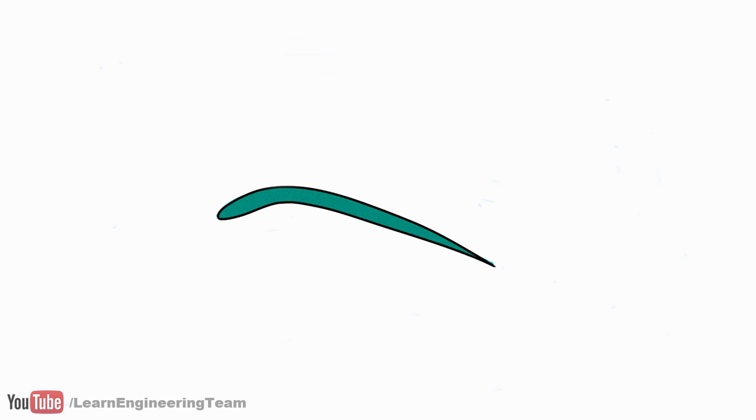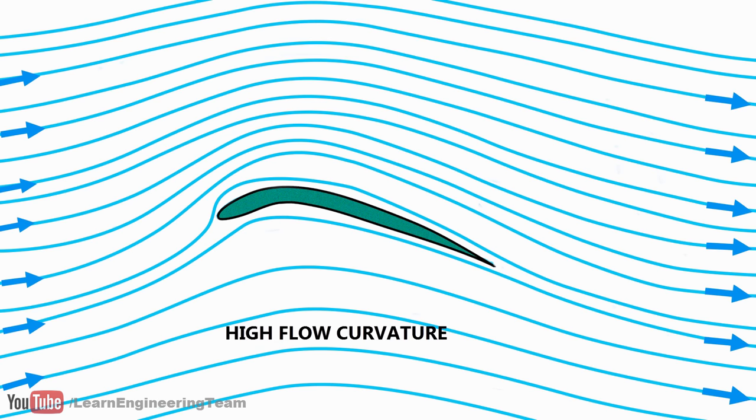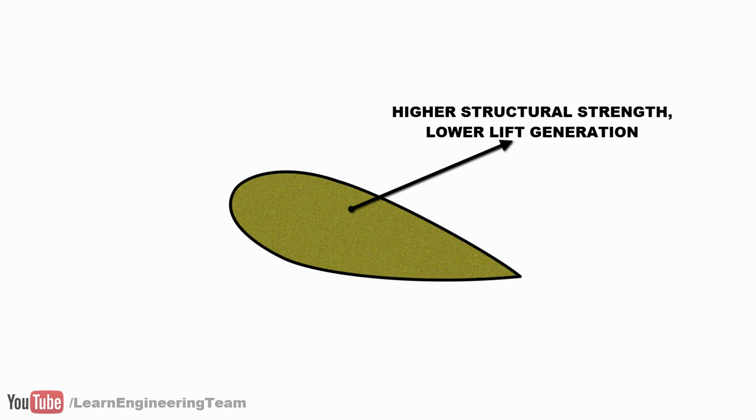But then, why are airplane airfoils not shaped like this? The reason is to give structural support and a space for accommodating the fuel tanks.